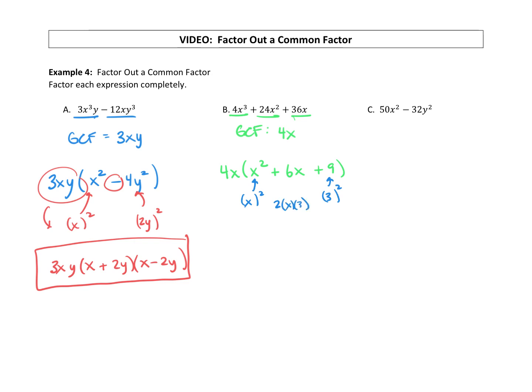So that means we can write this as a binomial squared, x plus 3 squared. And that GCF carries down. So here's our factored form.